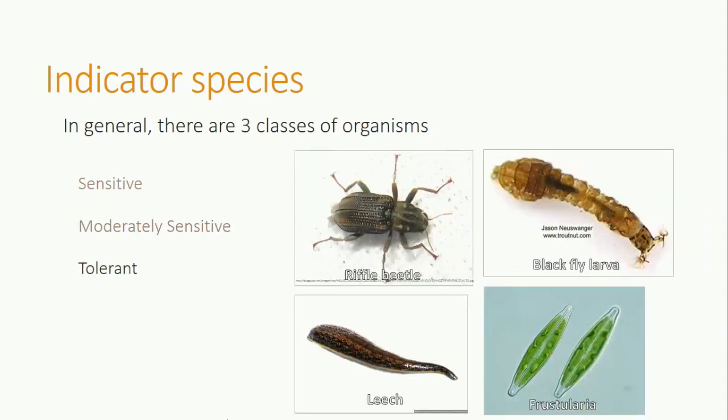Tolerant species, such as leeches, black fly larvae, riffle beetles, and Frustulia diatoms, can tolerate the most AMD contamination. While there are AMD-affected streams that contain no organisms, these organisms can survive in streams with a pH below 5.5. It's also important to remember that tolerant species can also be found in healthy streams alongside sensitive and moderately sensitive species.